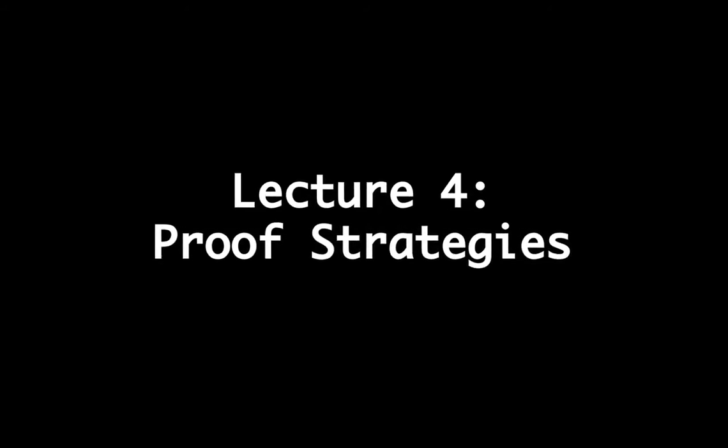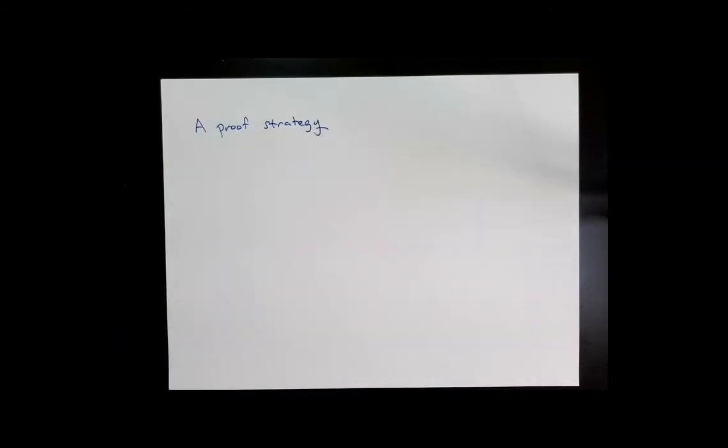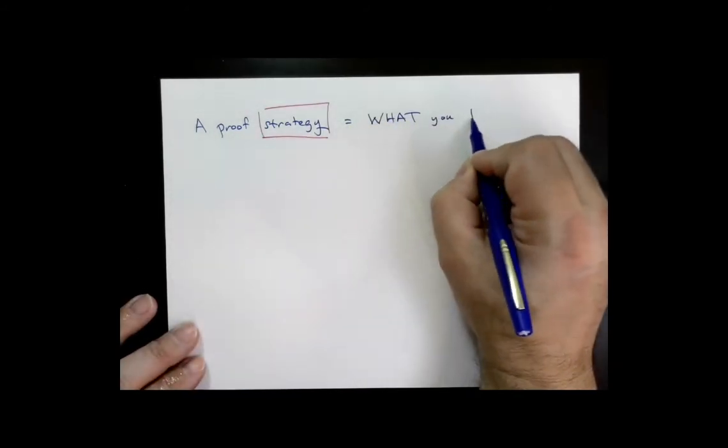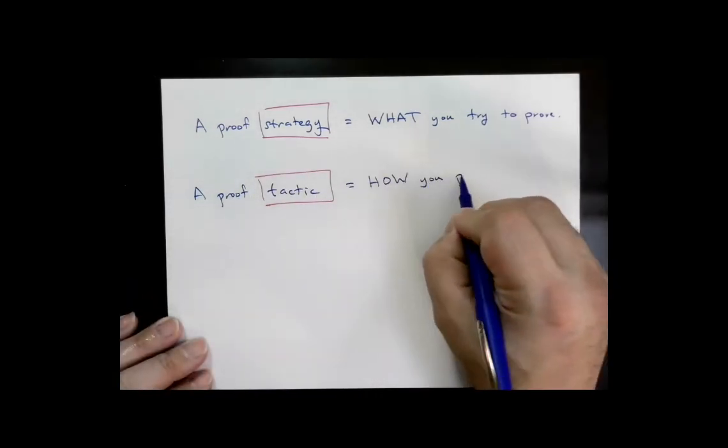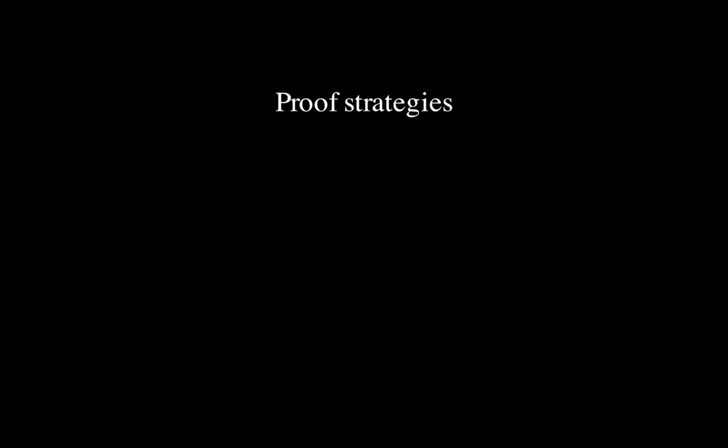Today I want to talk about what we'll be doing in lecture four, which is talking about proof strategies. We talked about proof tactics in the last lecture. Now we want to talk about proof strategies. A proof strategy is what you try to prove, and a proof tactic is how you decide to prove it. It's worth thinking about both of these when you approach trying to prove a theorem. Let's go over the main proof strategies.